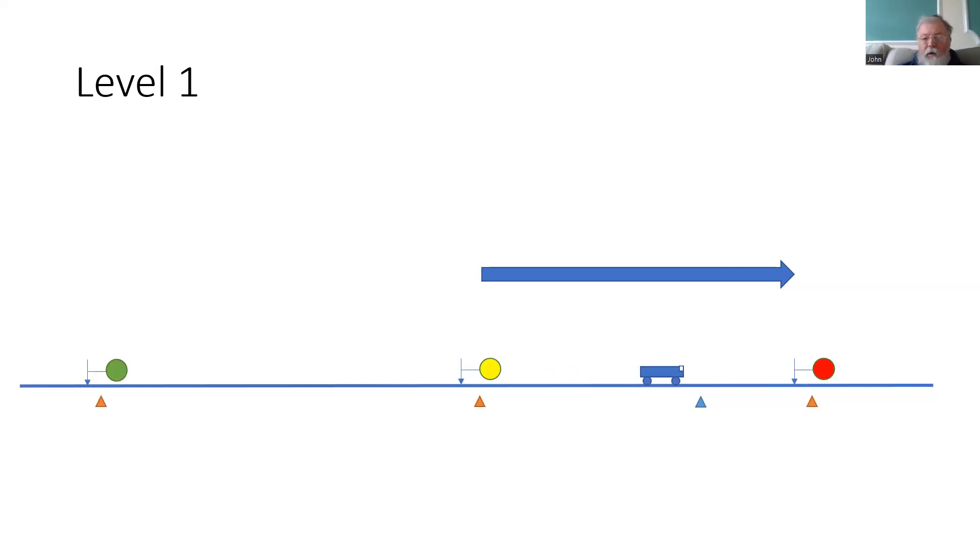If, however, on approach to the red signal it changes to green, then we want the train to be able to continue or even to speed up. But at the moment it has still got the stored information saying that is the end of the movement authority. What is the solution?